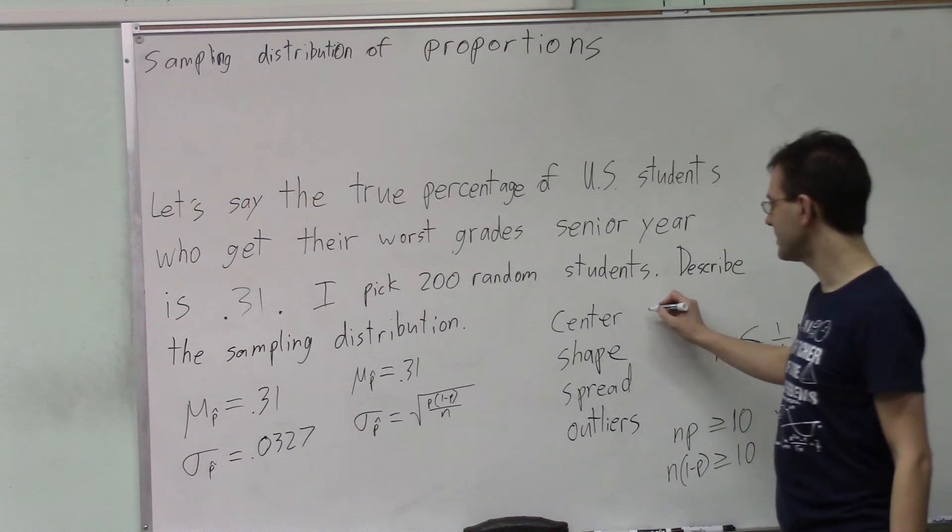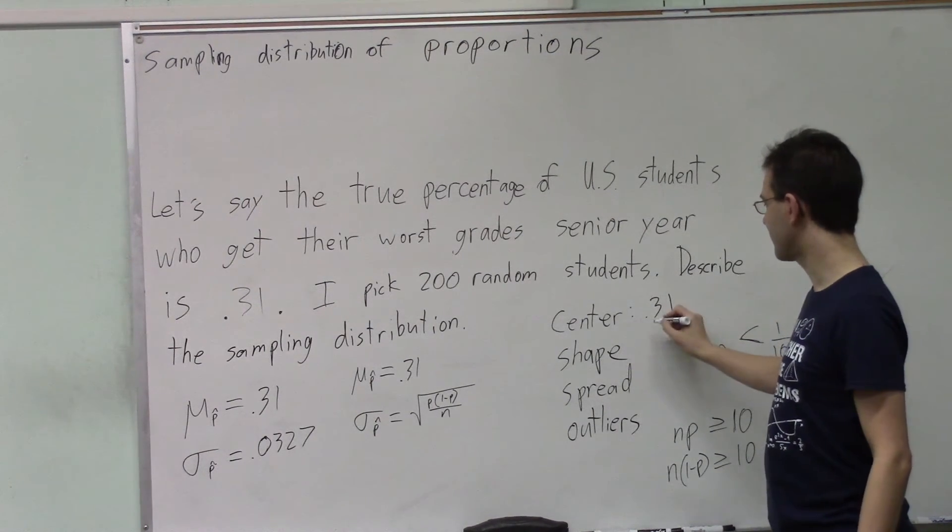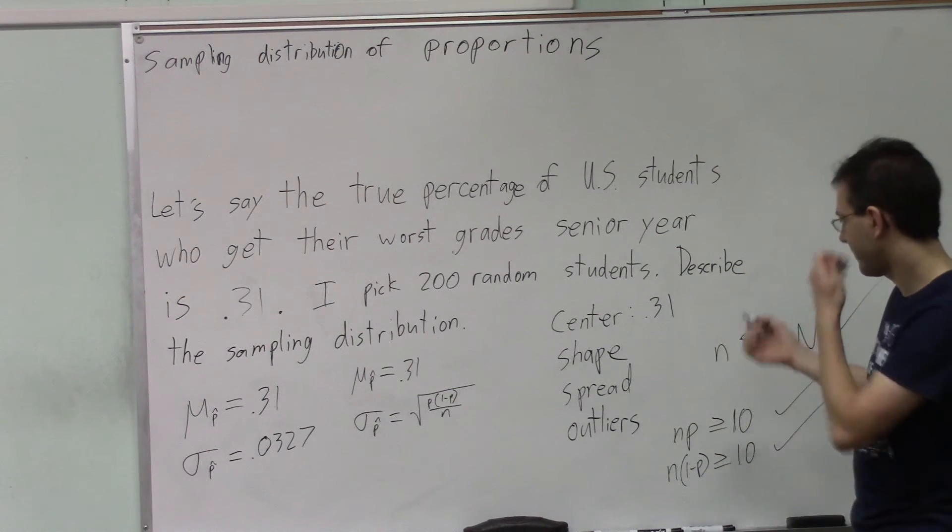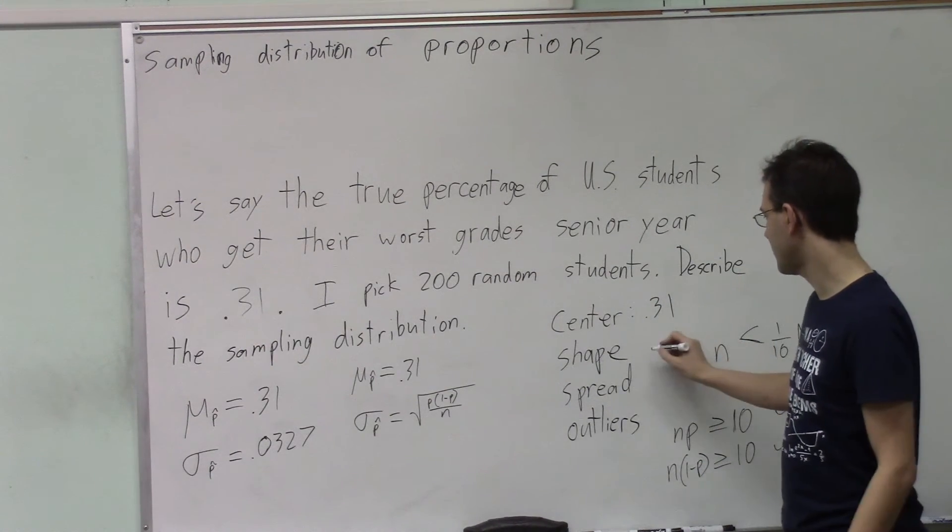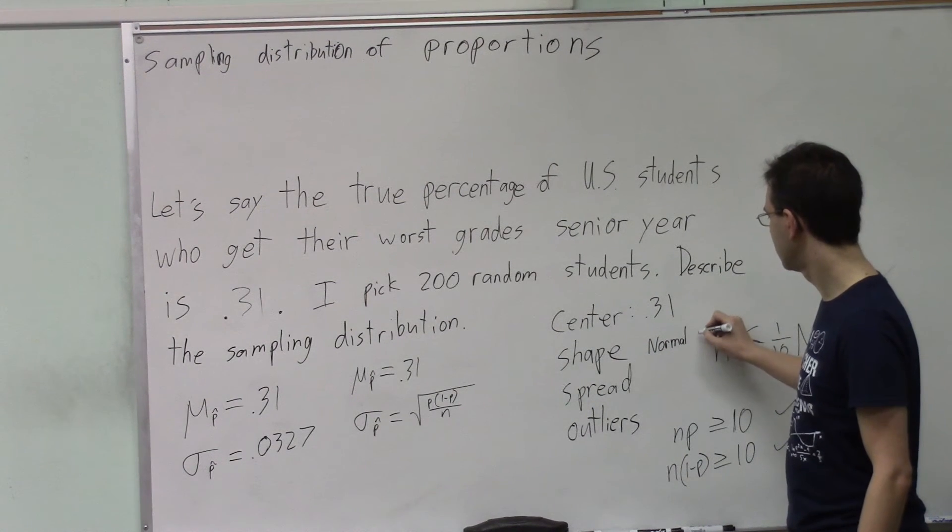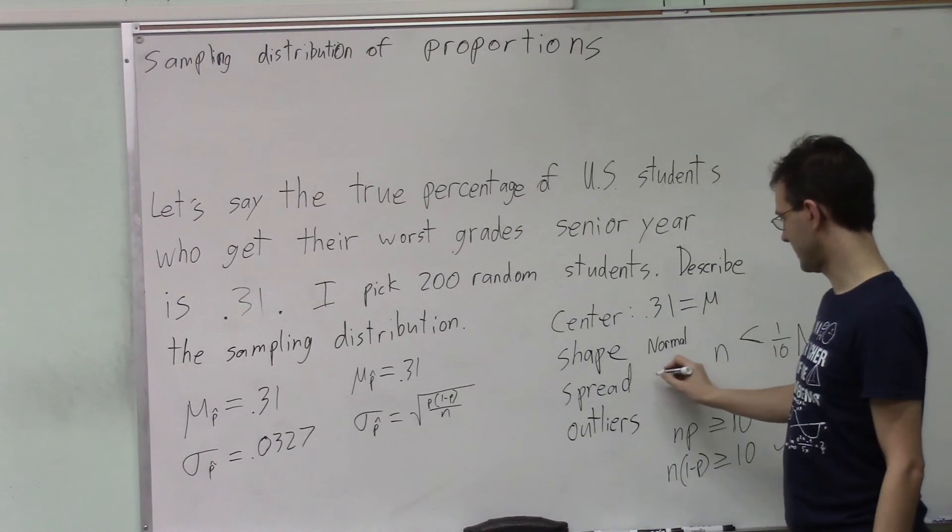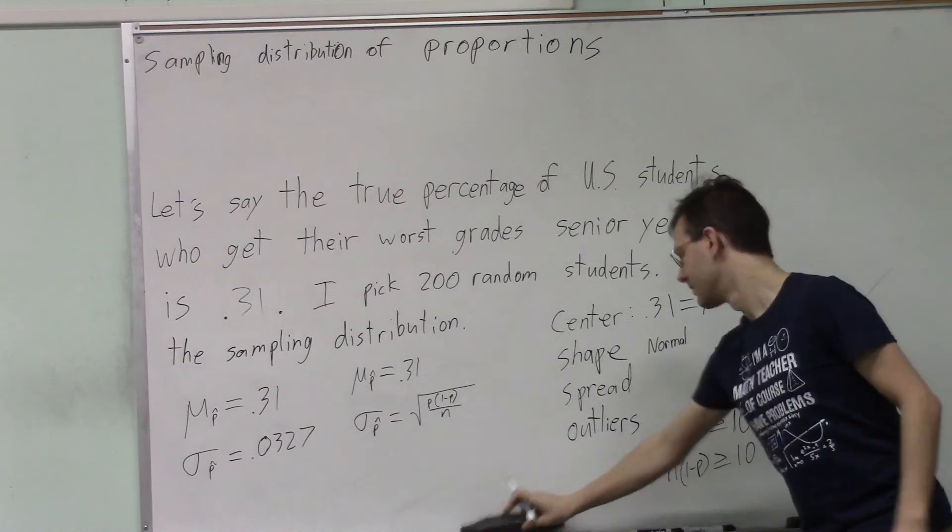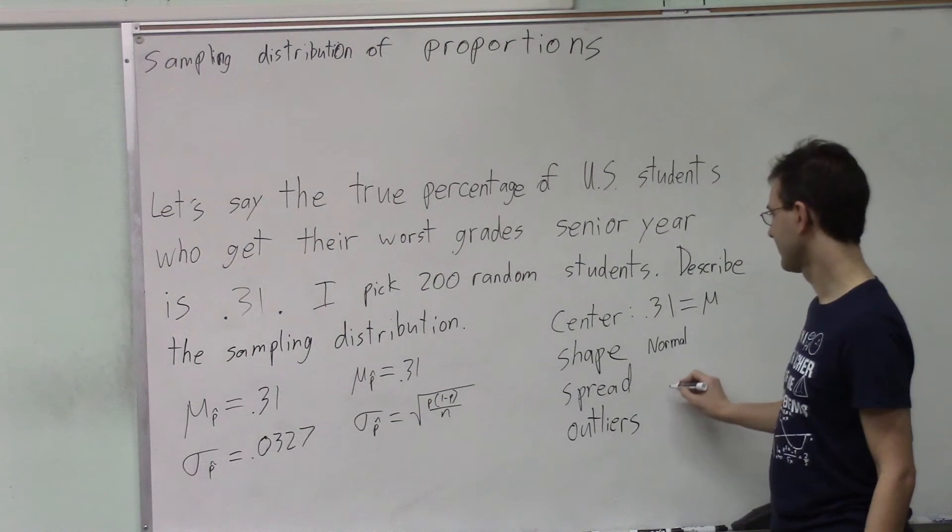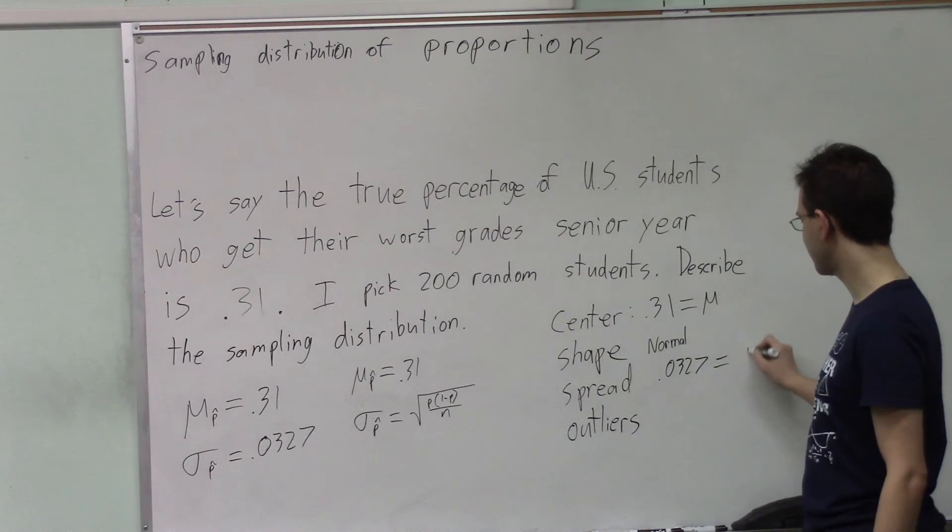So we can say the center is, the average result will be 31% of our students had their worst grade senior year. The shape is normally distributed. And the spread, standard deviation, 0.0327 is the standard deviation.